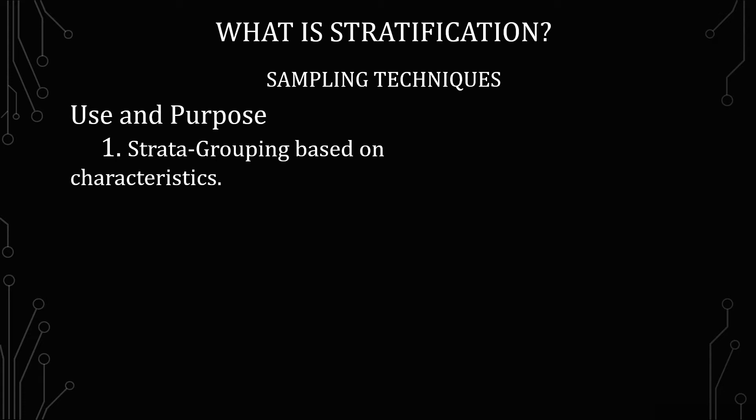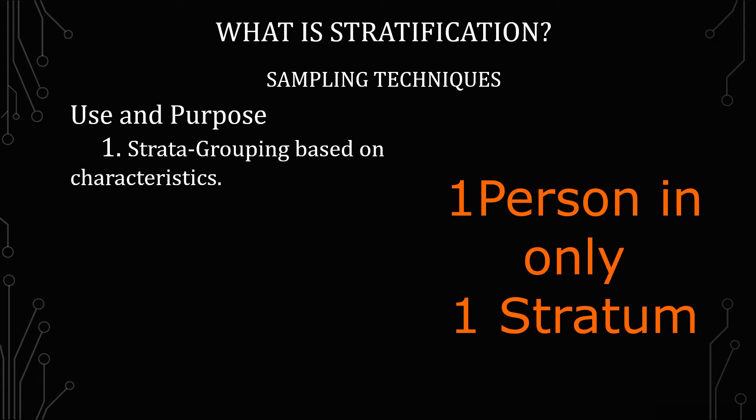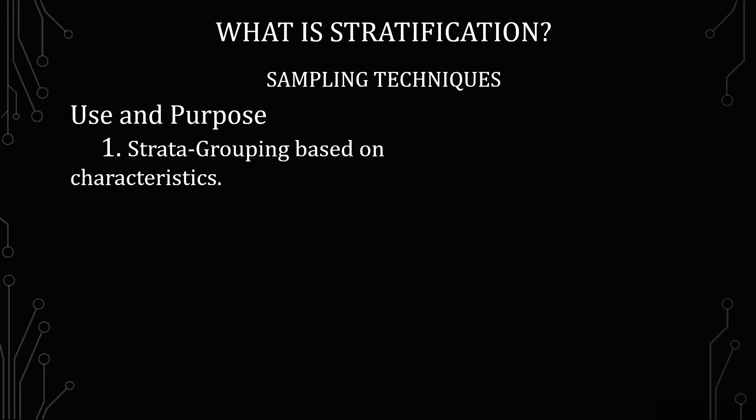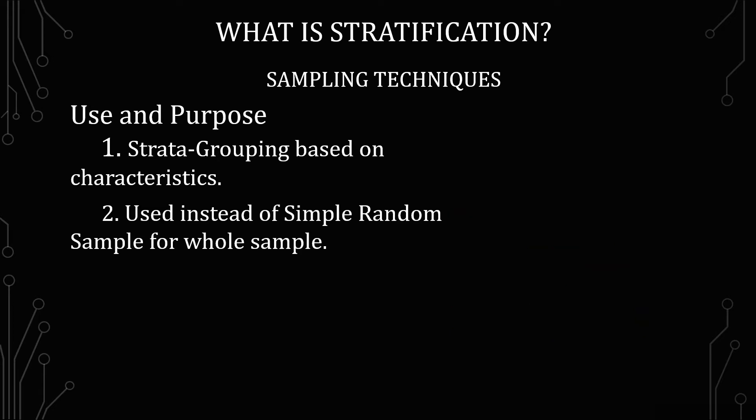Those characteristics also need to be identified such that one person is in only one group. You're not going to have one person in two or three groups — it should be set up so each person falls into exactly one group. If not, you're going to have problems with your analysis at the end.